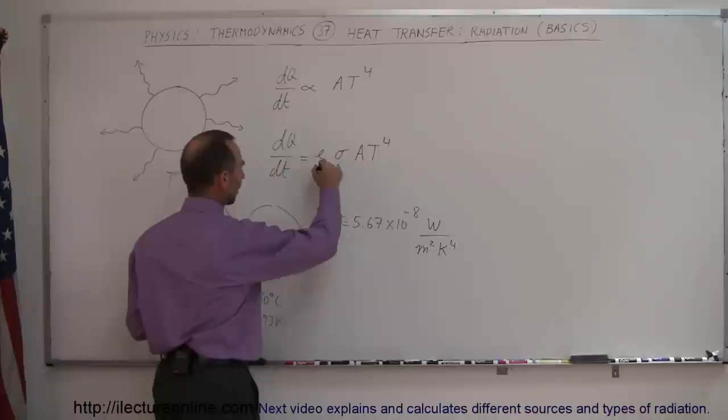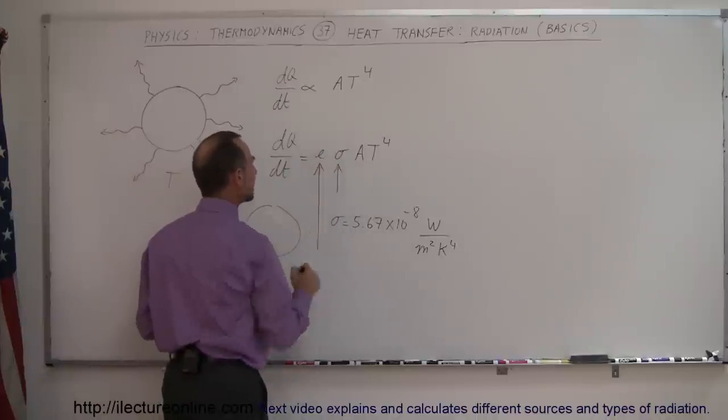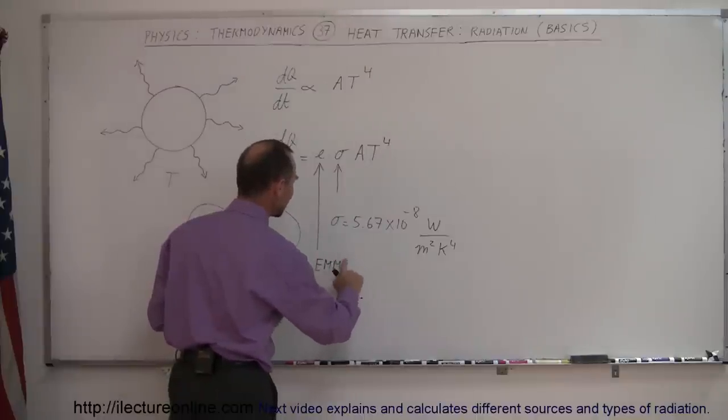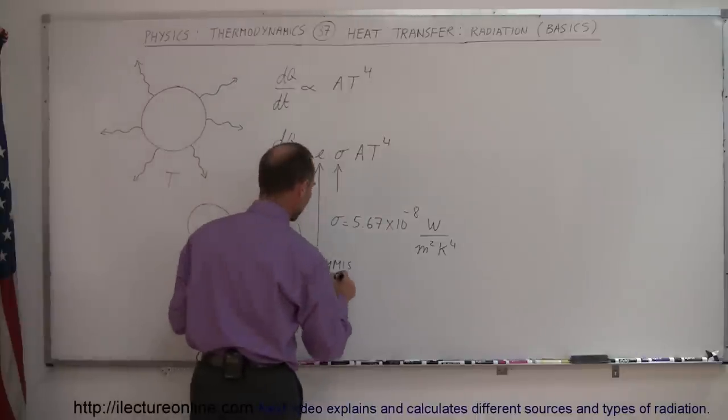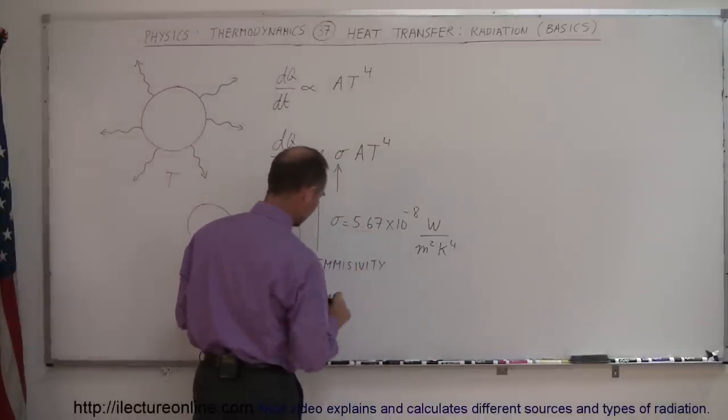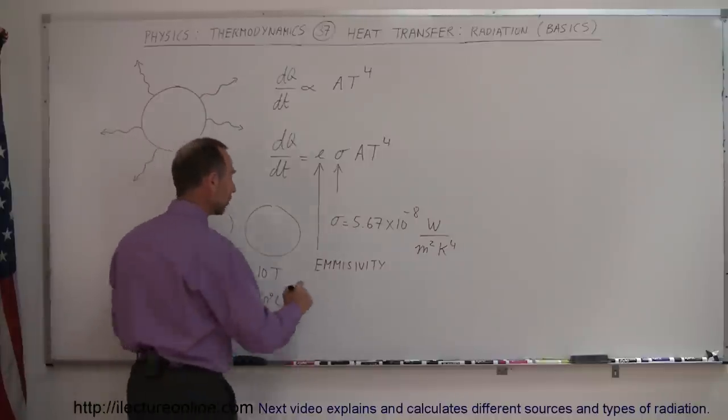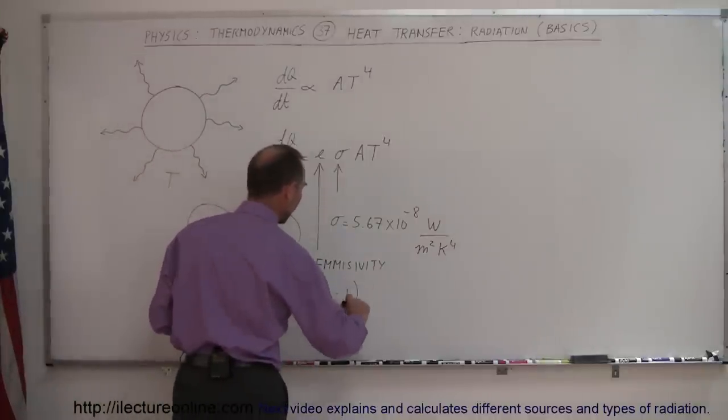The second constant that we need here is what we call the emissivity. And the emissivity is dependent on the property of the material. Emissivity. Alright, and usually that number is somewhere between 0 and 1.